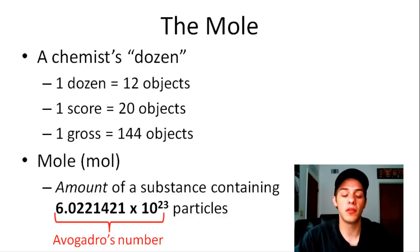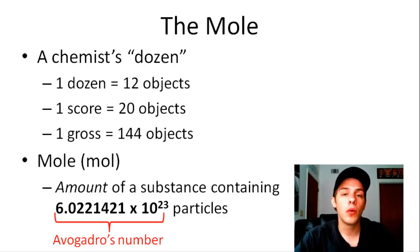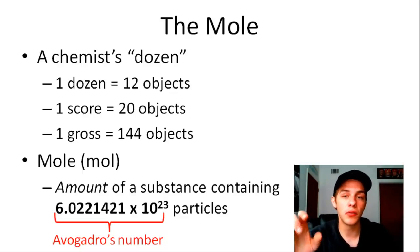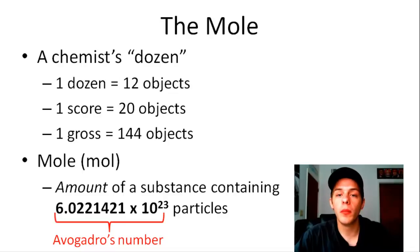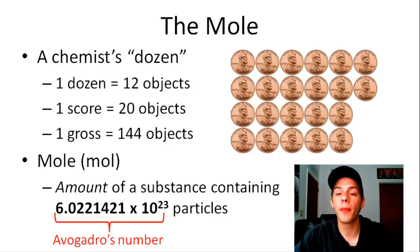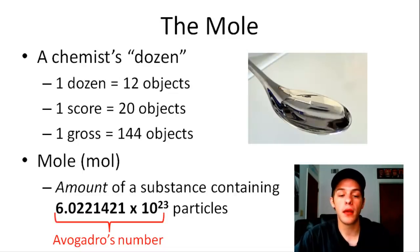Two things should be immediately apparent about this number. First, this number is huge — a very, very large number. The reason why we use such a large number is because atoms are so small. Once we multiply by this really large number, it allows us to attach a number to things that we can actually see, reach out, look at, lift, and touch — things that are tangible. For instance, a mole of copper atoms is about equal to 22 copper pennies, and a mole of water molecules is roughly equal to a tablespoon of water.